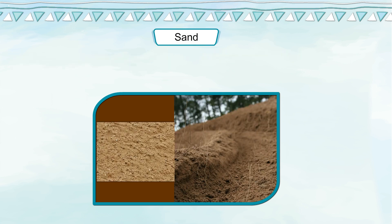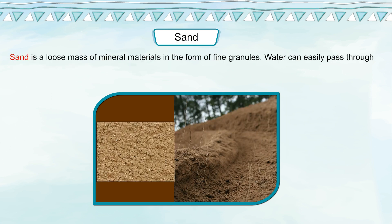Sand. Sand is a loose mass of mineral materials in the form of fine granules. Water can easily pass through this kind of soil.